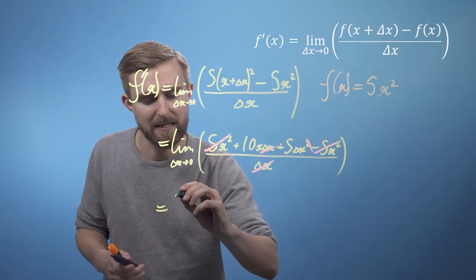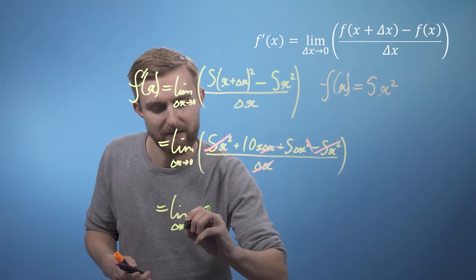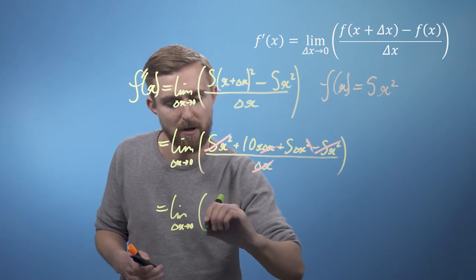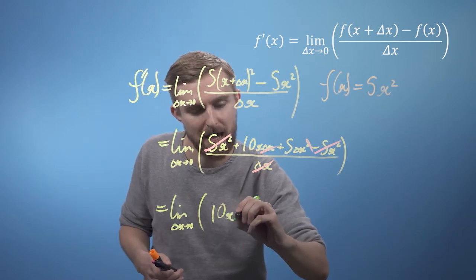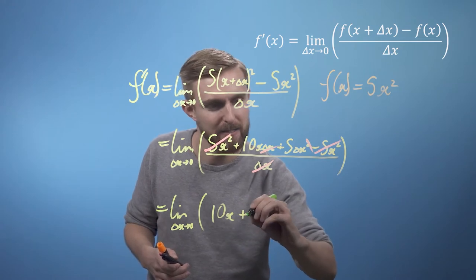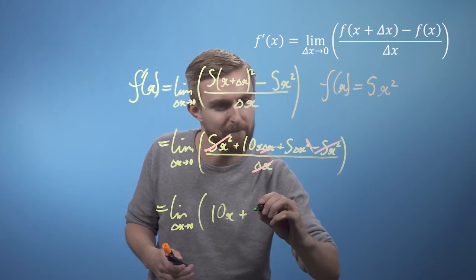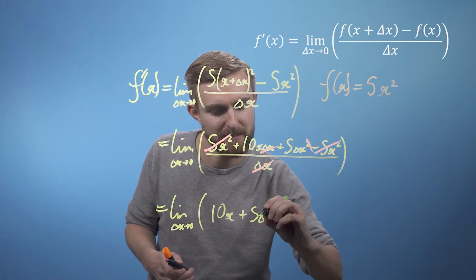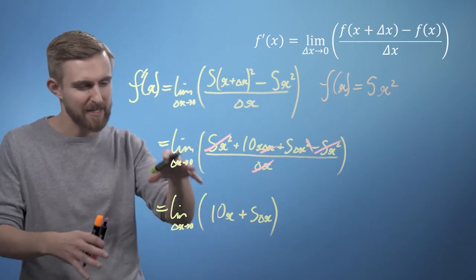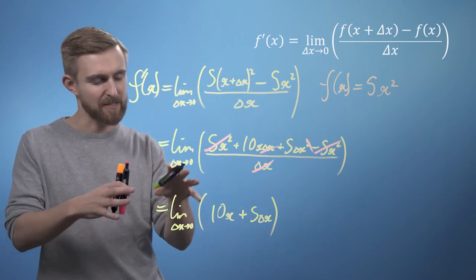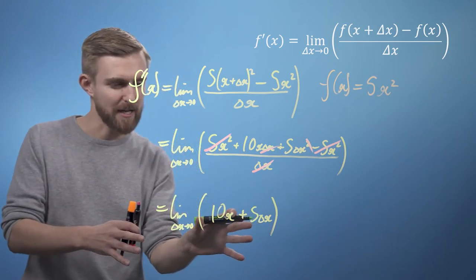So, we can now say it's the limit as delta x goes to 0 of, we've just got 10x plus 5 delta x. Okay? And we're looking at this thing. So, it's saying the limit as delta x goes to 0 of this expression here.